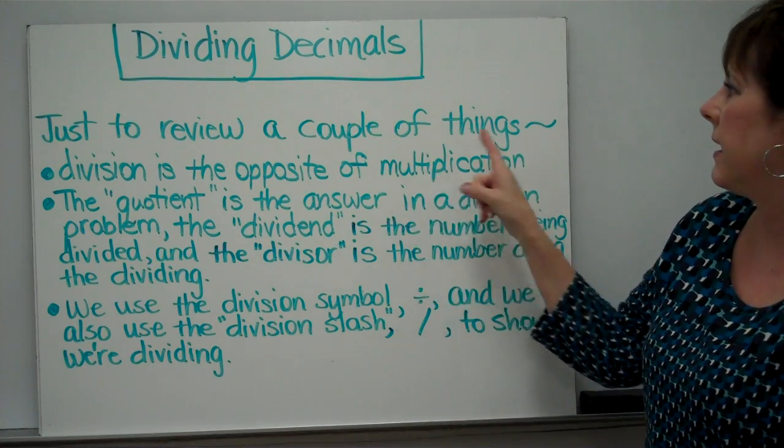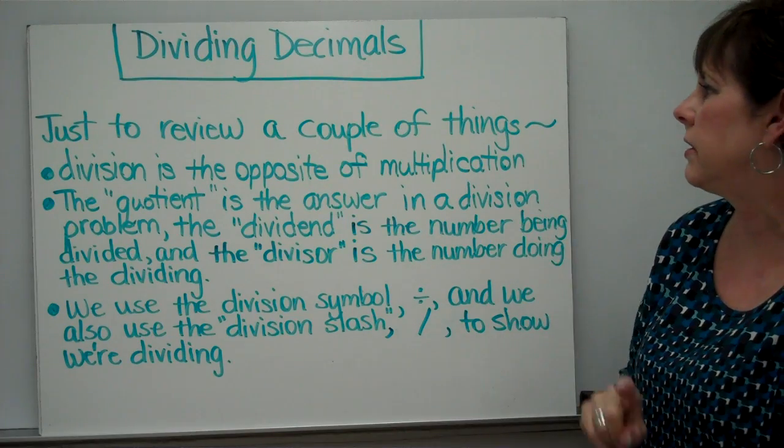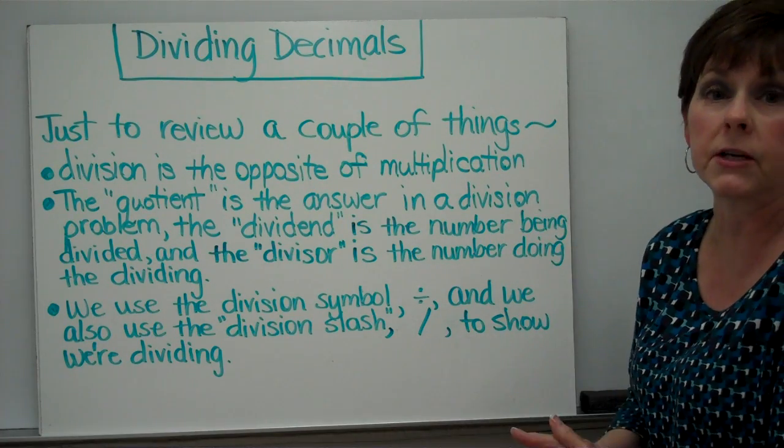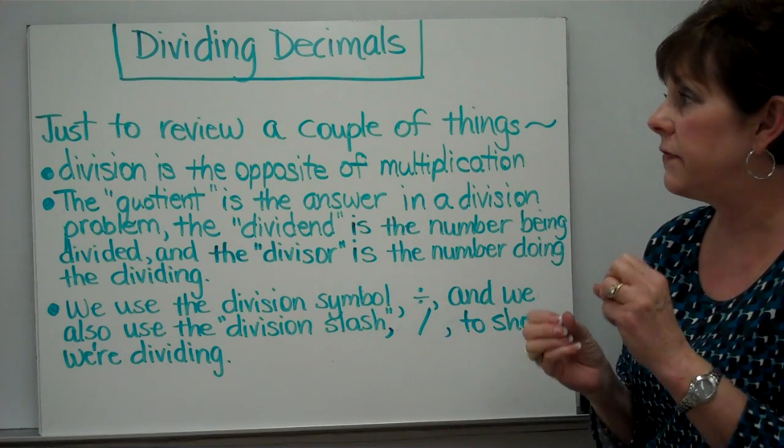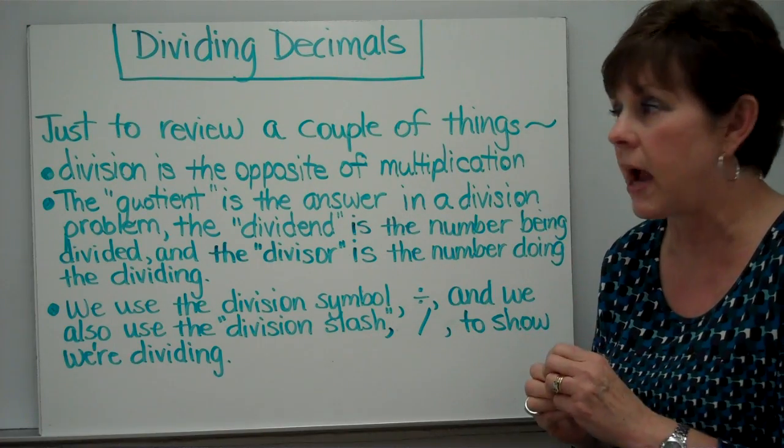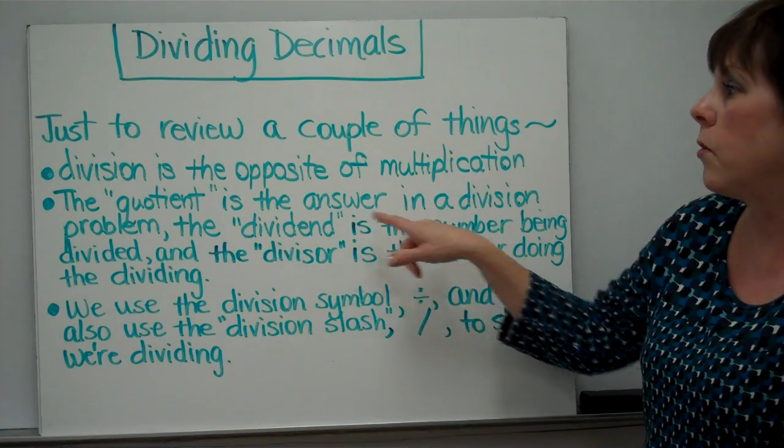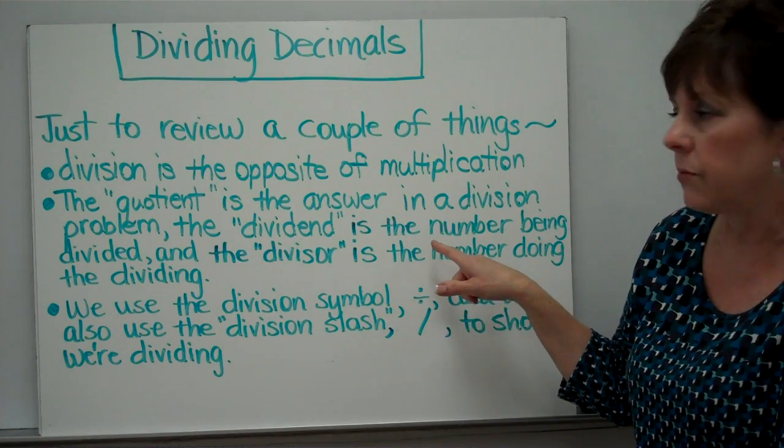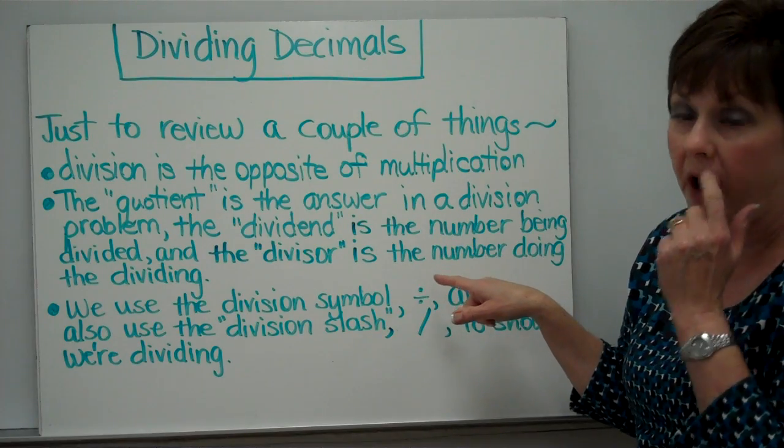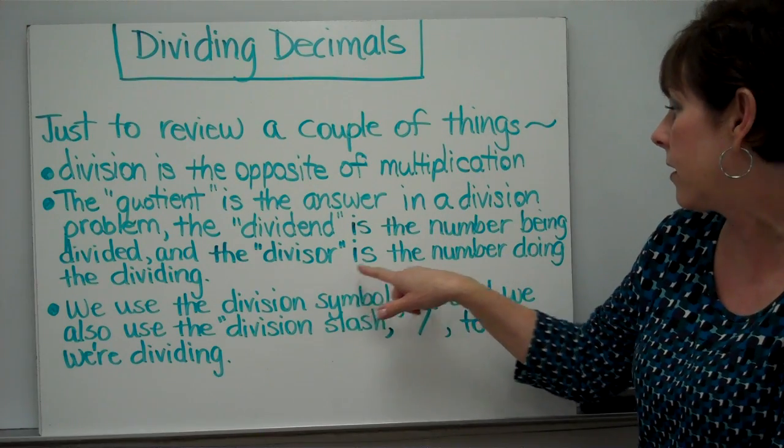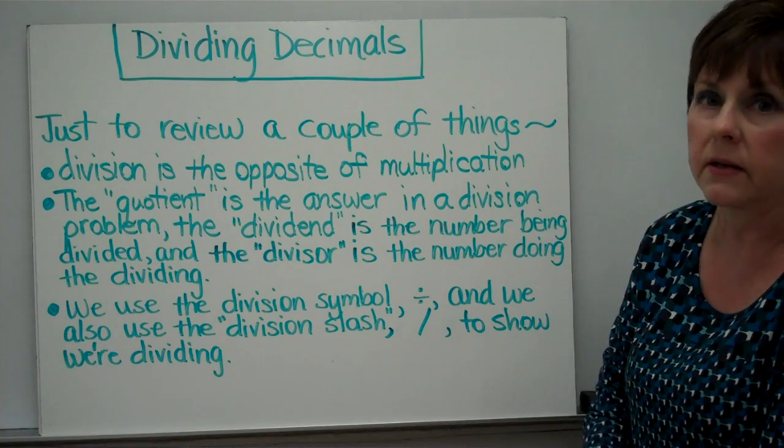Let's review a couple of things. First of all, division is the opposite of multiplication. If multiplication is repeated addition, division is repeated subtraction. The quotient is the answer in a division problem. The dividend is the number being divided, and the divisor is the number doing the dividing.